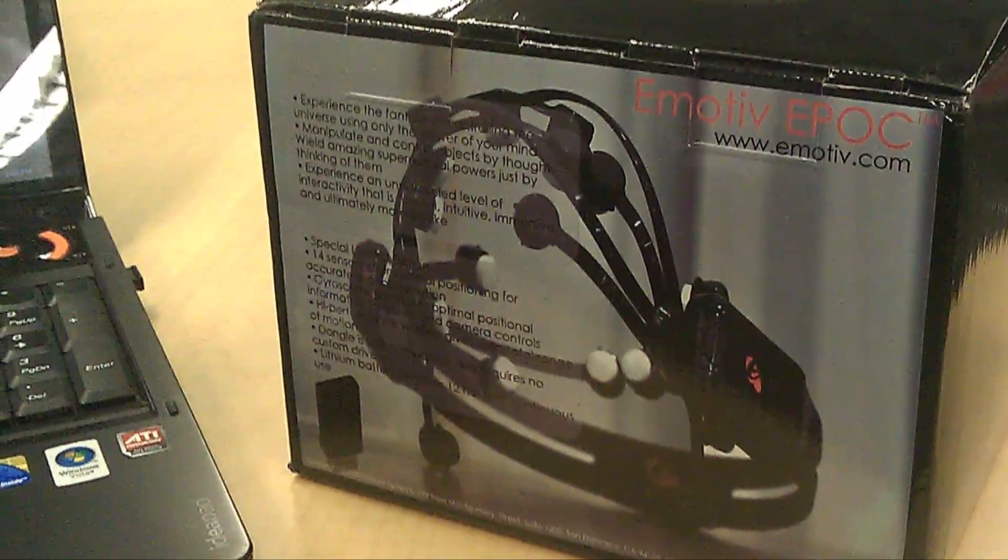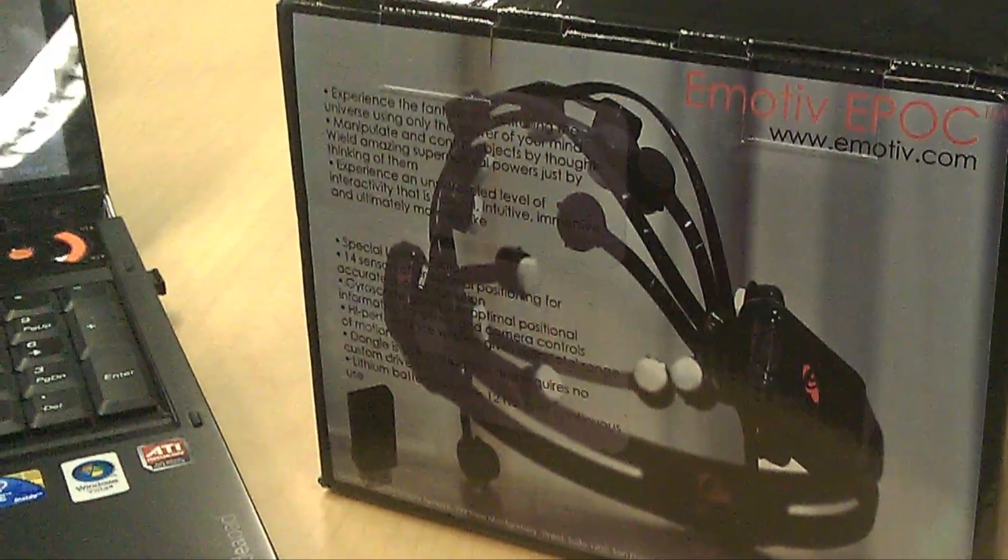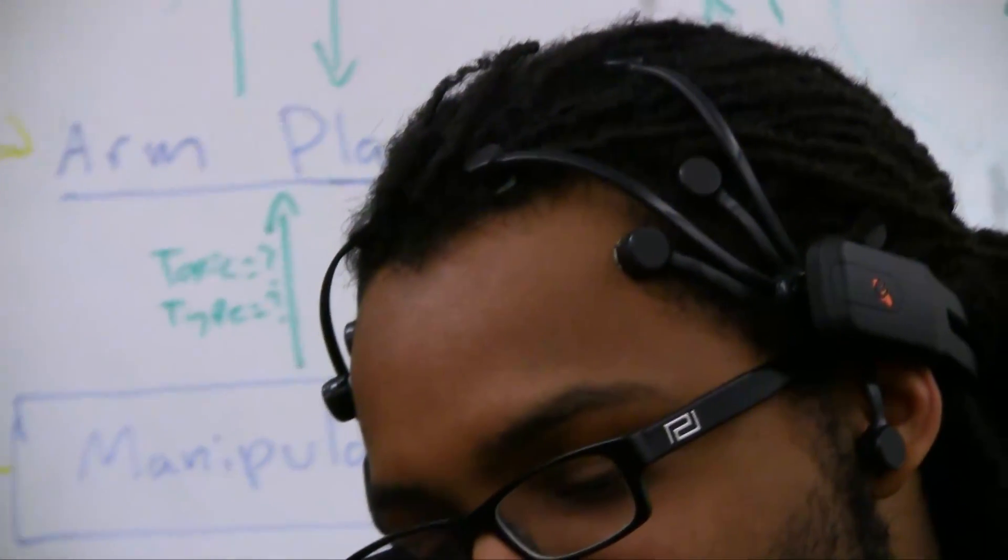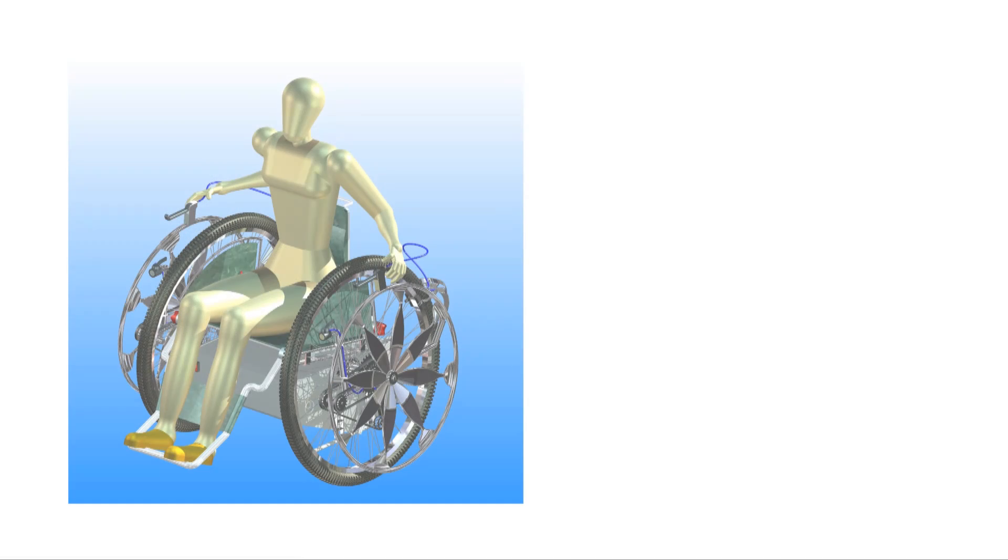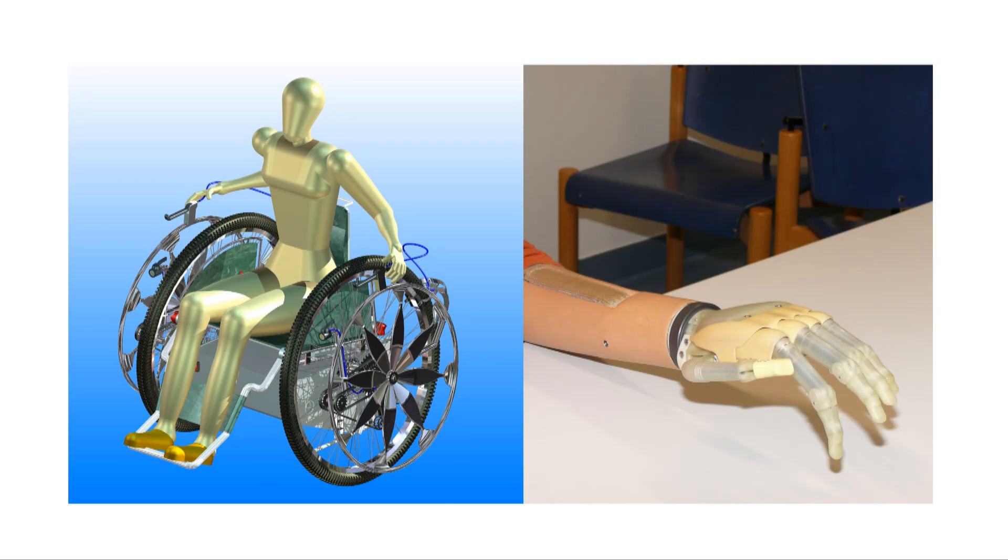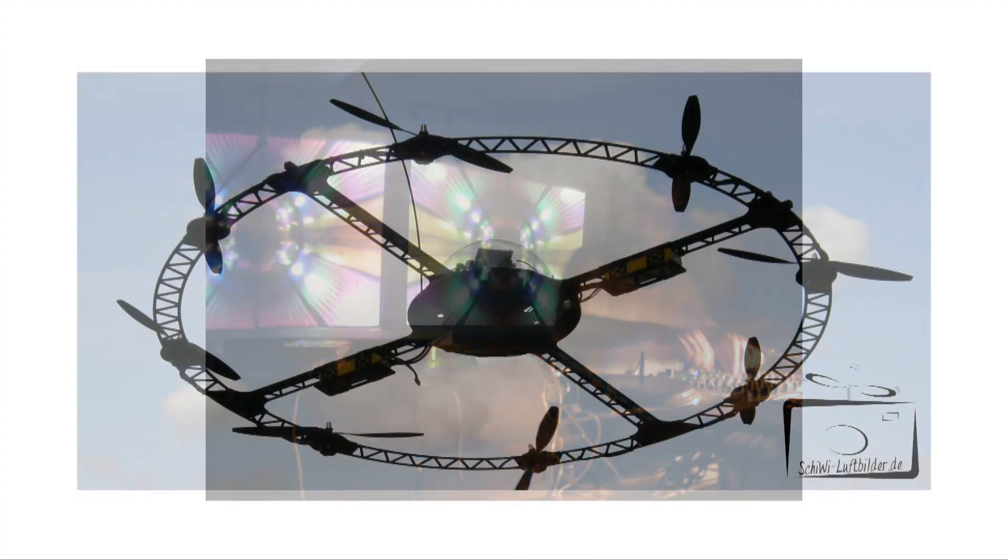When thinking about the future applications for real-world object control using brain-computer interfaces, it is clear that artificial intelligence must play a major role to make anything possible. To start, a few applications could be controlling a wheelchair or a prosthetic limb. More advanced applications might include live musical composition or controlling a remote aircraft.